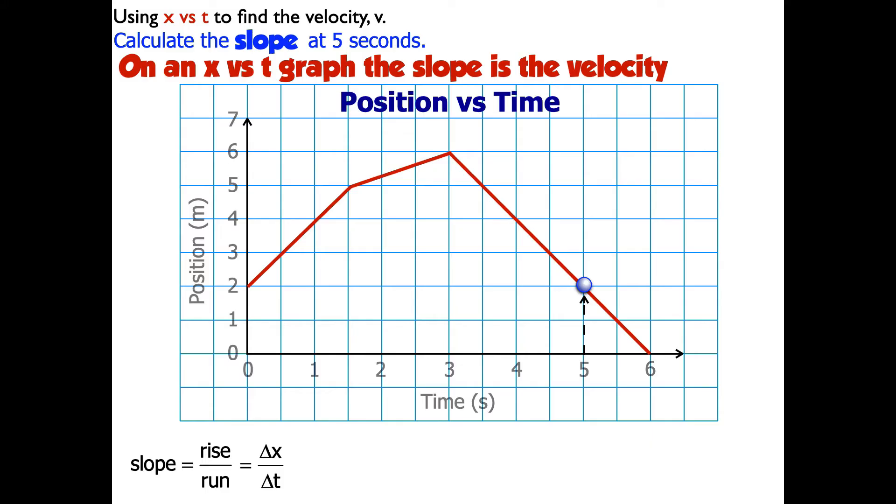So what I need to do now is I need to find the slope of the line, because I know the slope of this line between 3 and 6 seconds is the same everywhere. It's the same at 3½, 4, 4½, 5, the slope is the same.